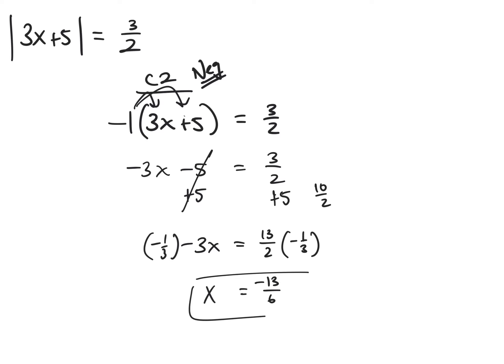Look at that — both of my x values end up being negative. Is that okay? Yes. When I plug this negative value back in, it will reduce to negative 3 halves, and when you take the absolute value of negative 3 halves you get positive 3 halves. That's the idea of the negative case — finding which value of x makes the expression equal to negative 3 halves inside the bars.